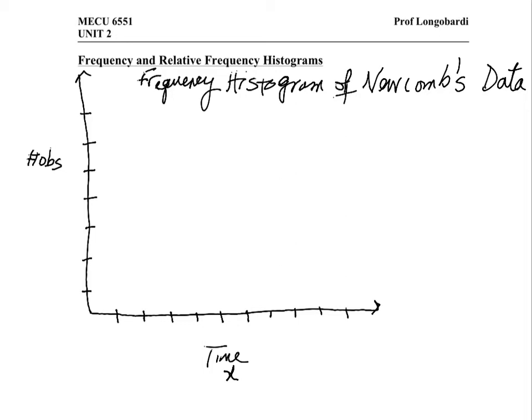We went by 5, and we started at 15. We have enough room here to begin with 0 in the center, and we can number all the way across. As far as the height of the bars of the histogram, the highest one will have 28 observations in it. So we need to go as high as 28. Let's also go by 5s here.